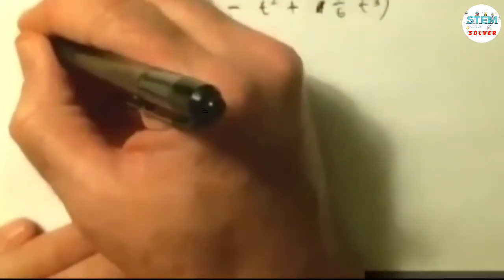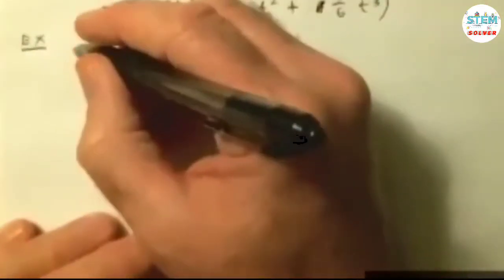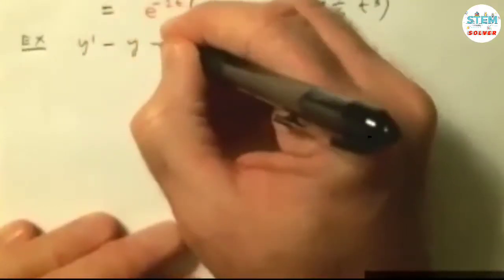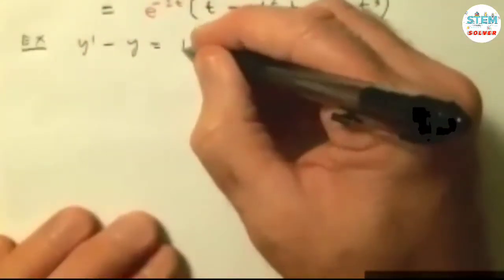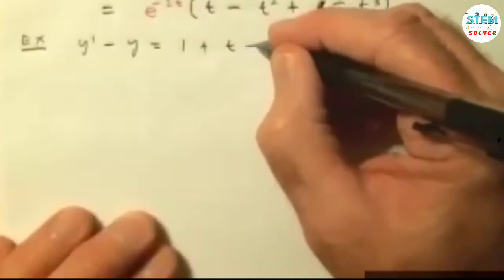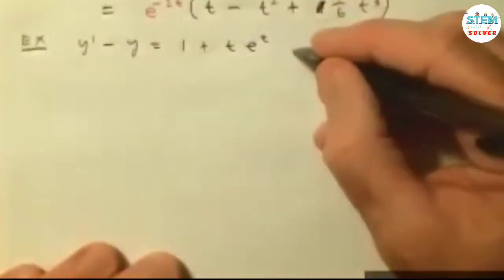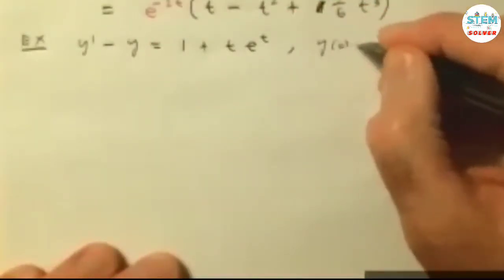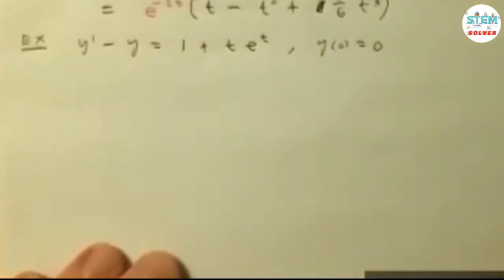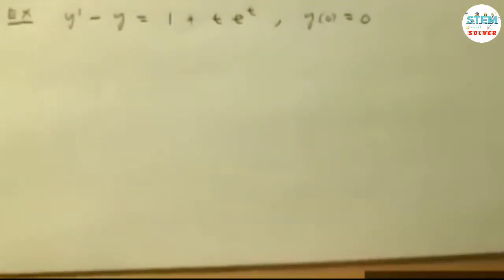Let's say that we have the following: y prime minus y is equal to 1 plus t e to the t, with the condition that y of 0 is equal to 0. So we have a differential equation and an initial condition.